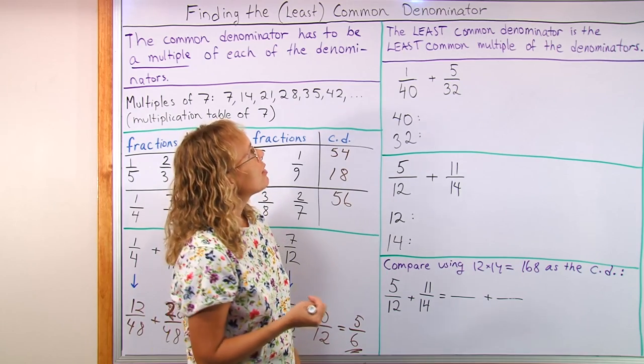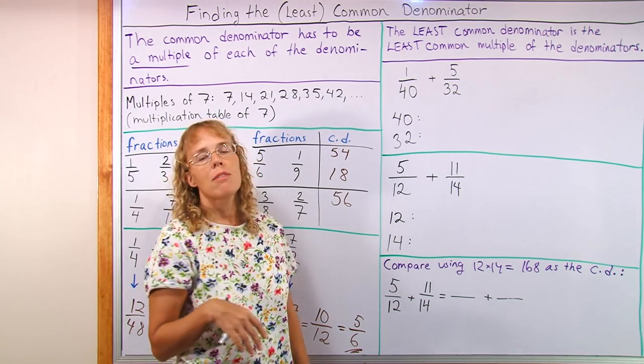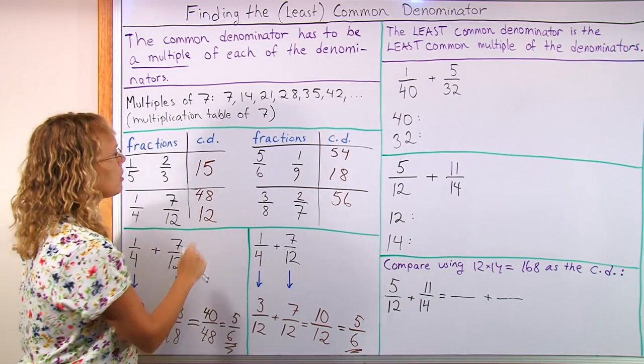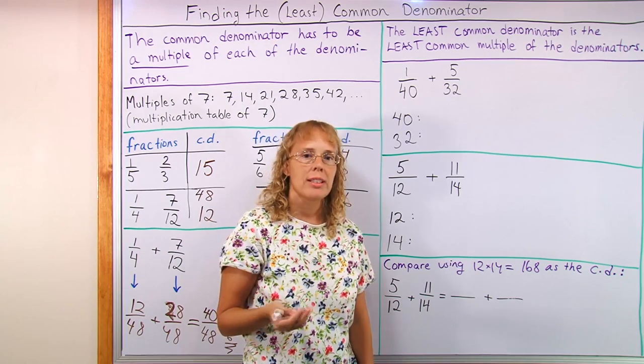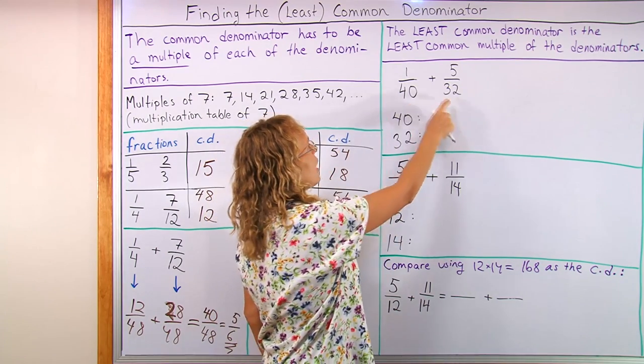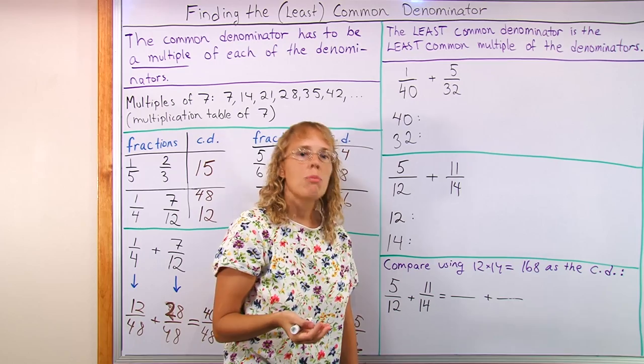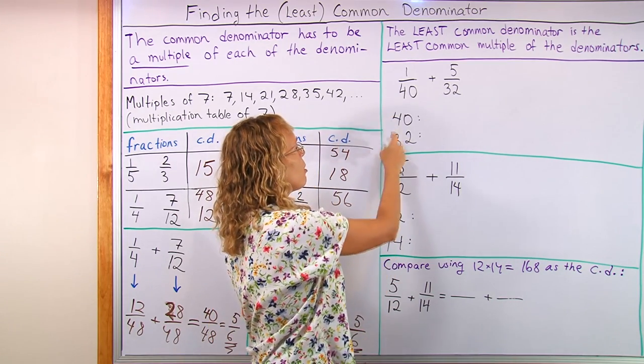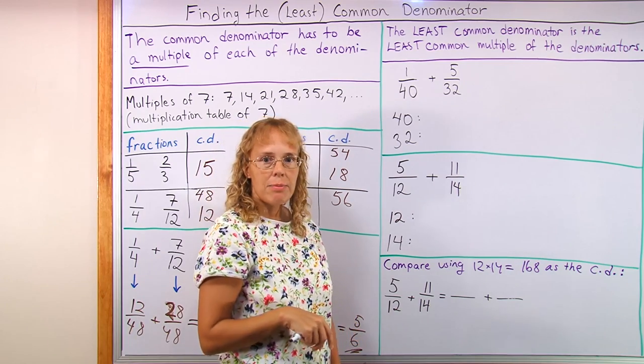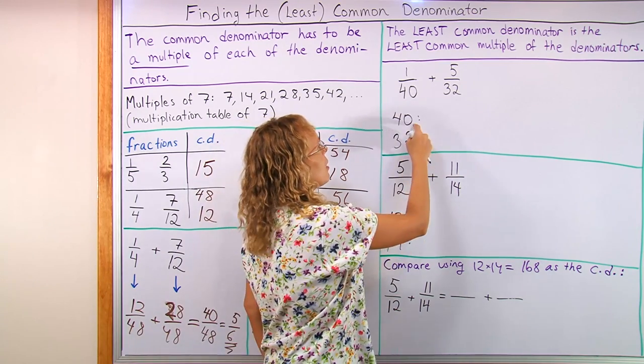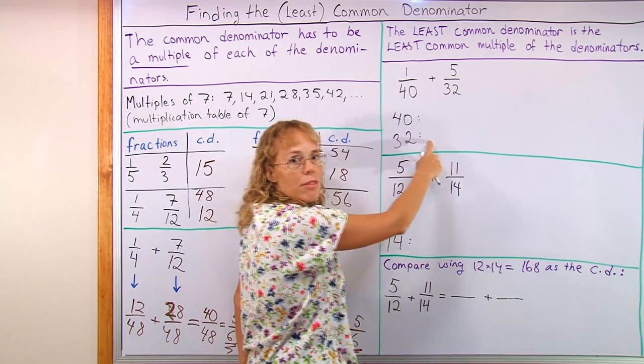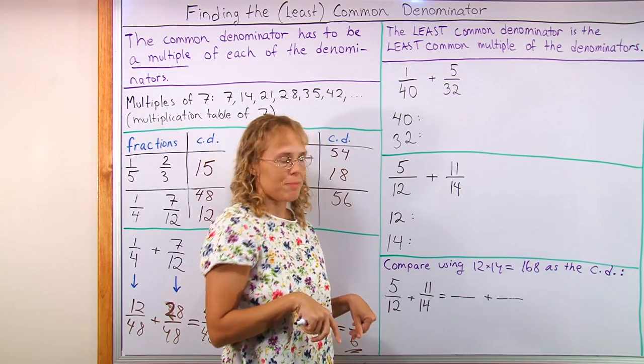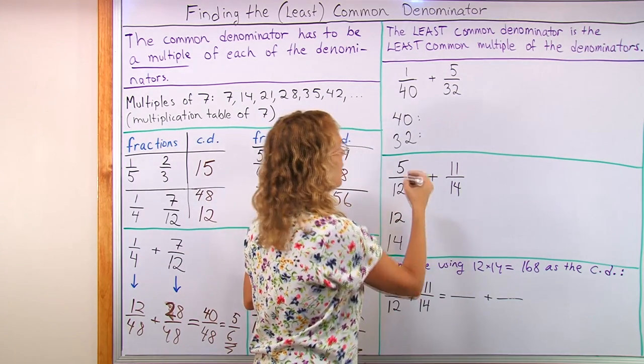The least common denominator is the least common multiple of the denominators. We basically already found it here, 18, 12, using this method. But I want to now explain it in more detail. If we have these two fractions to add, and we want to use the least common denominator when we're adding, then we need to find the least common multiple of these two numbers. And let's make a list of multiples. List of multiples of 40, list of multiples of 32, and then find some common numbers in them and then find the least of them.